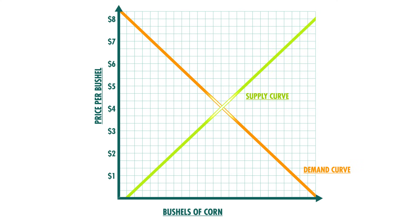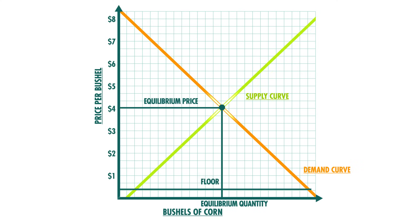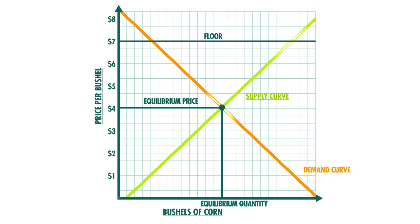How about a price floor? Look at corn with an equilibrium price of $4 per bushel and a price floor at $7. The higher price will give farmers an incentive to increase the quantity supplied. But consumers don't want to pay those higher prices, so the quantity demanded falls. The result is a surplus and deadweight loss, so society is worse off.